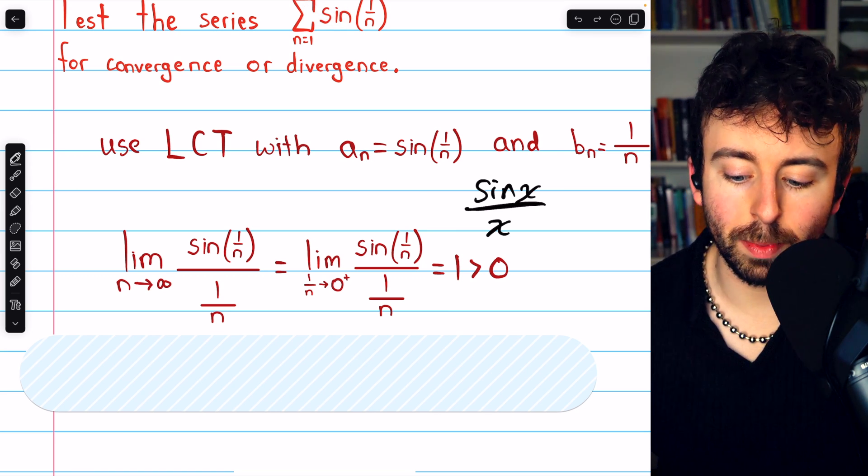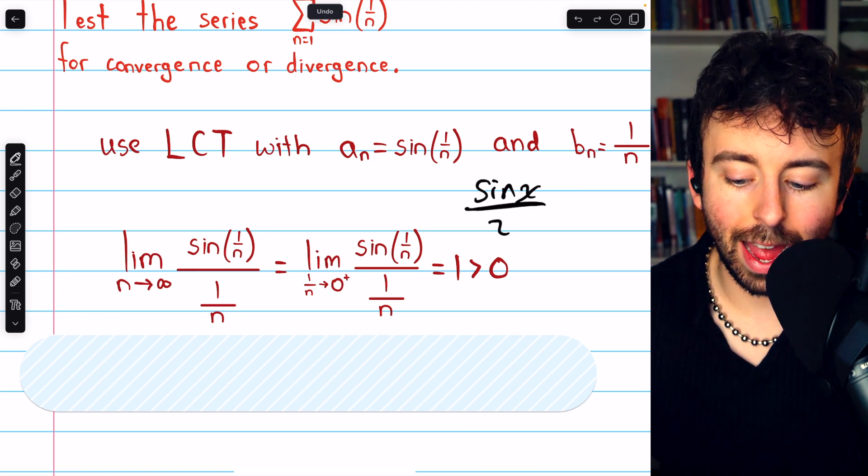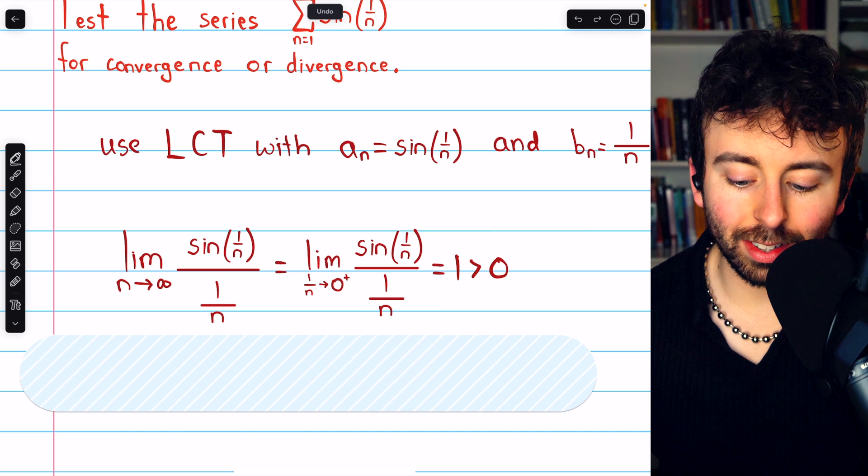I'll leave a link in the description to my lesson proving this limit, though, that sine x over x approaches 1 if x is approaching 0. That's exactly what we see here. So this limit is 1, which is a positive number.